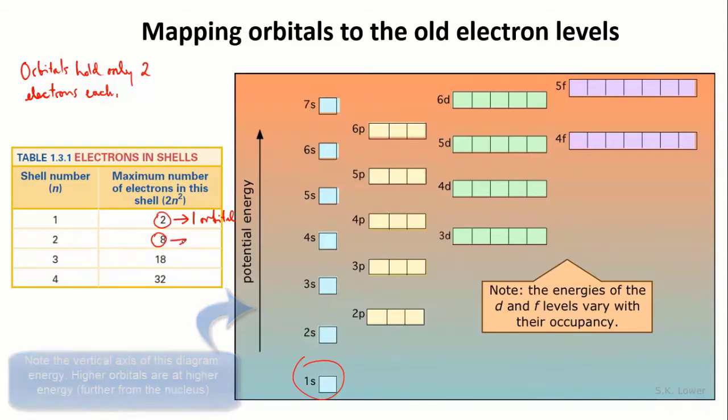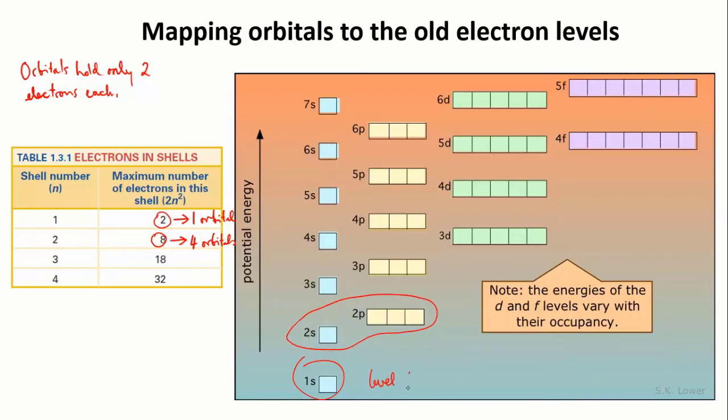Level 2 is able to hold eight electrons, as you know. Since each orbital can only hold two electrons, that means that the second energy level must be made up of four orbitals, each holding two electrons.